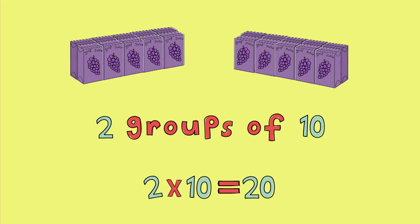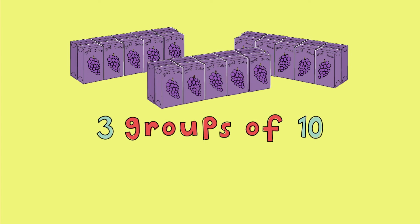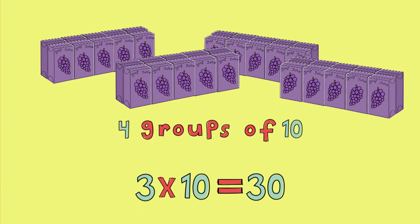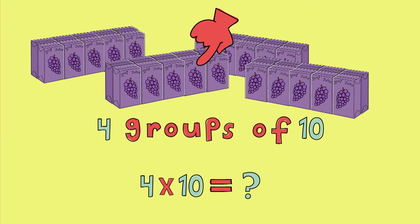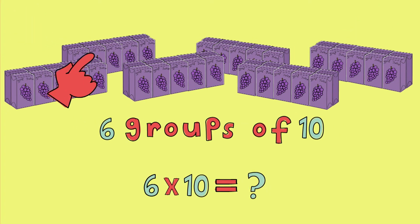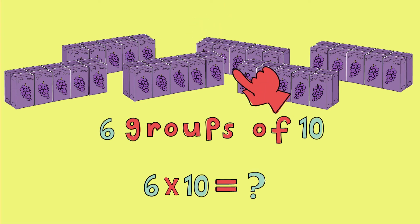What does the number two represent? The number of groups. What about the number ten? The number of juice boxes in each group. And what about the twenty? We have twenty juice boxes all together. So now what if I had three groups of juice boxes? Three times ten equals — count with me — ten, twenty, thirty. What about four groups of ten? Ten, twenty, thirty, forty. And ten groups of ten? Ten, twenty, thirty, forty, fifty, sixty, seventy, eighty, ninety, one hundred.